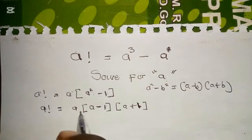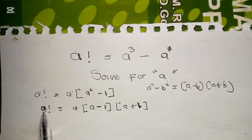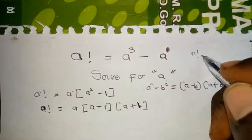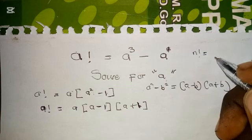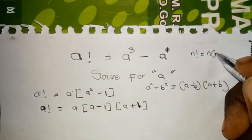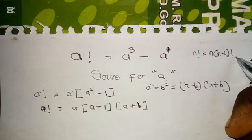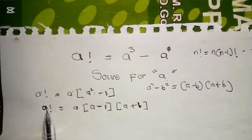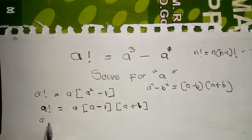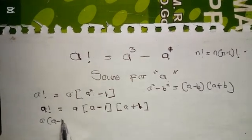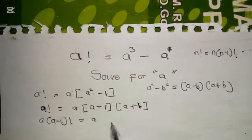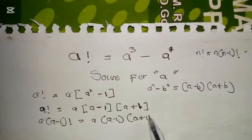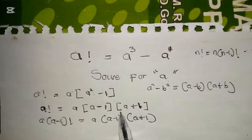Now, don't forget this is a factorial. When you have n factorial, you can write it as n times (n minus 1) factorial. So we write a times (a minus one) factorial equals a times (a minus one) times (a plus one). This allows us to cancel a and (a minus one) from both sides.